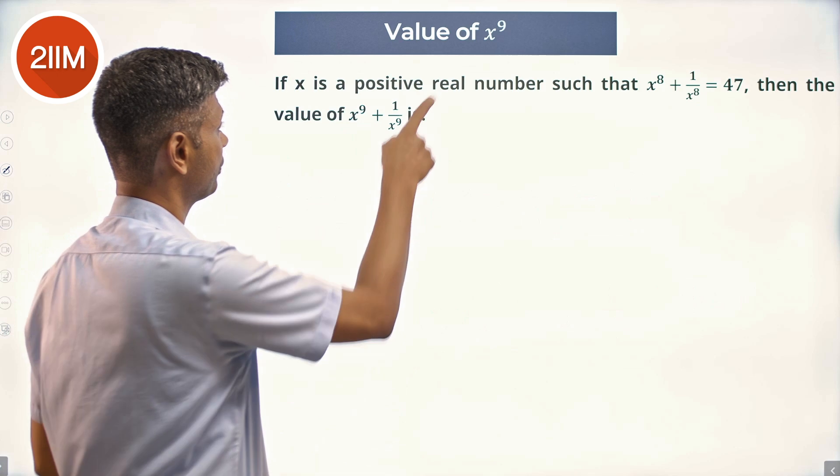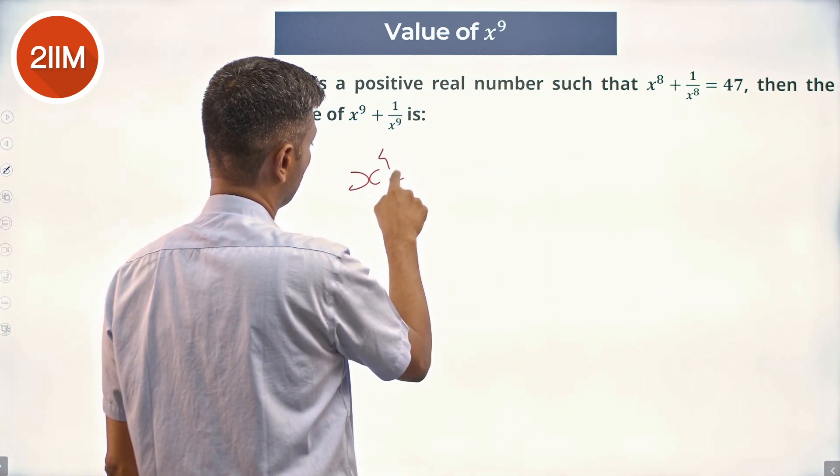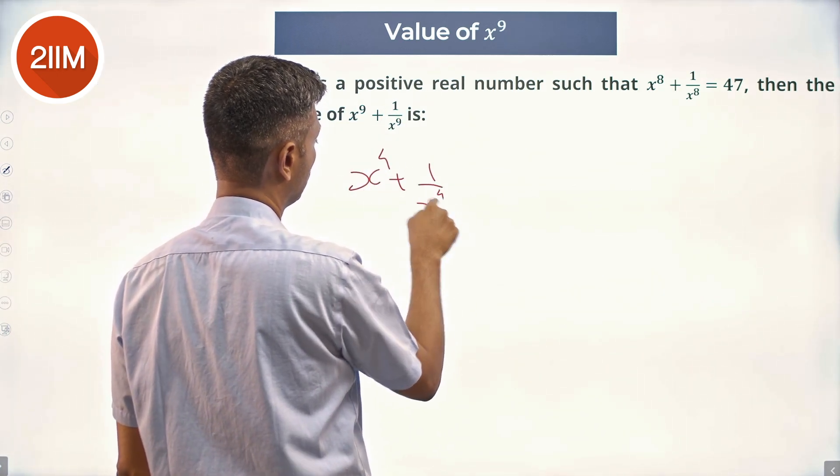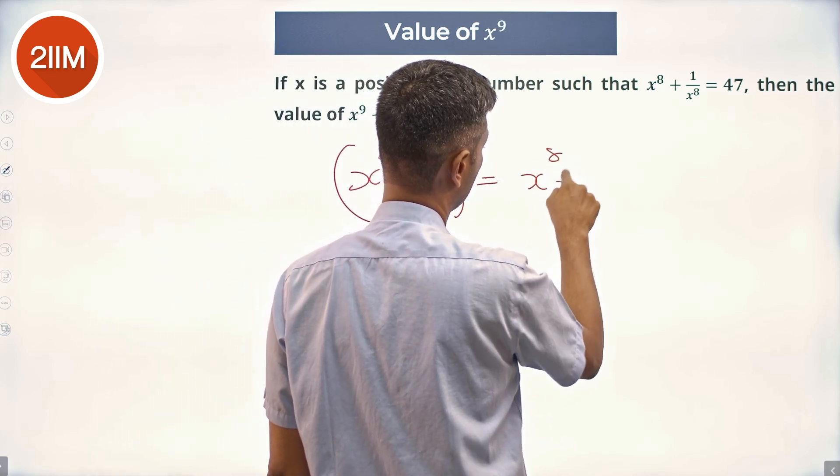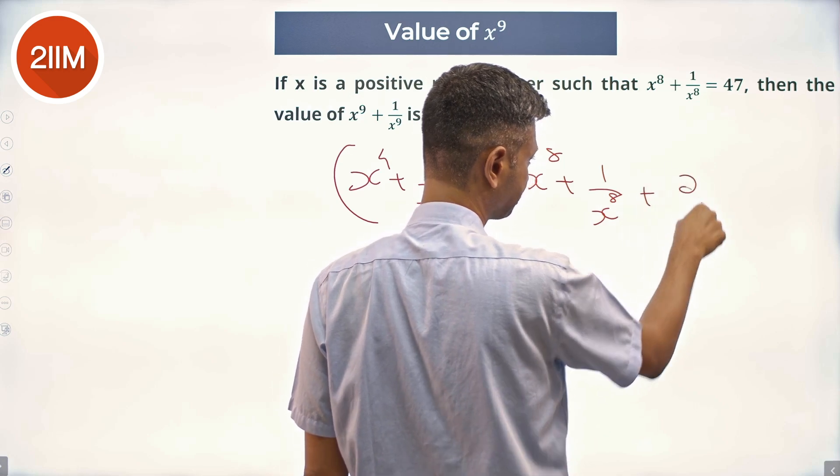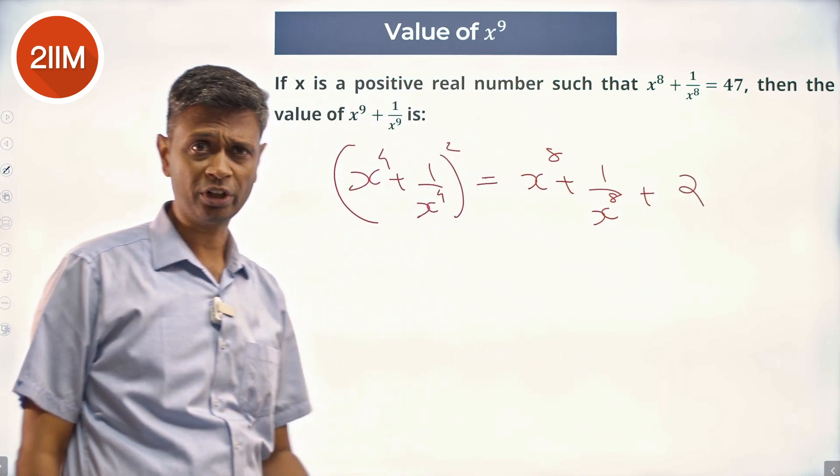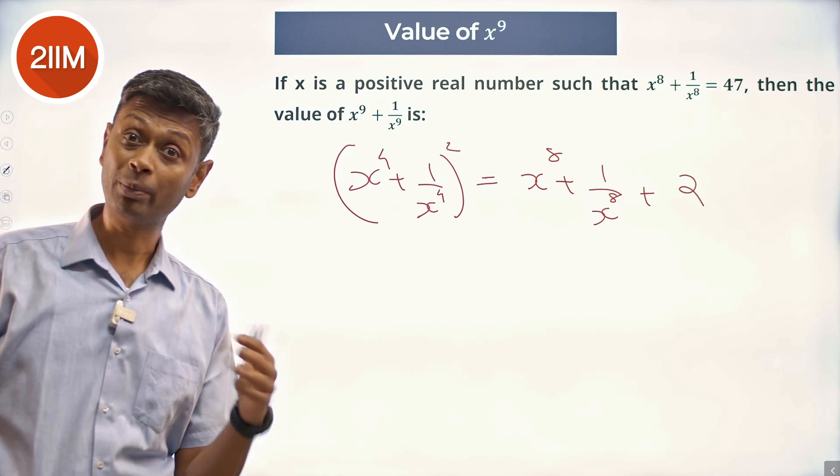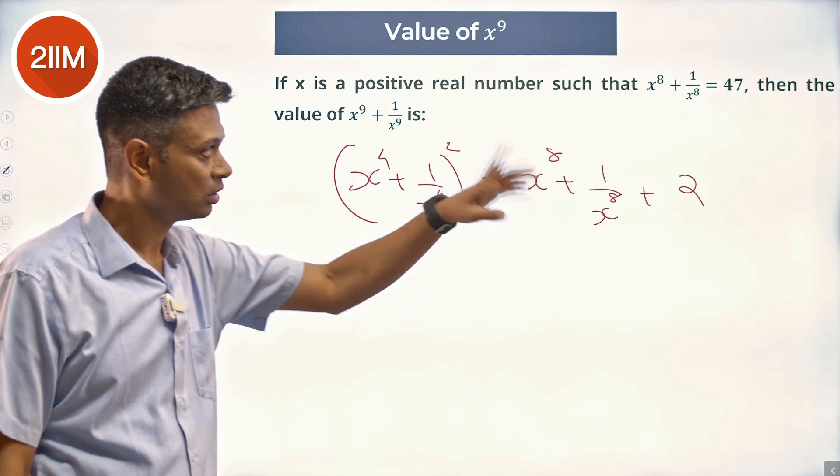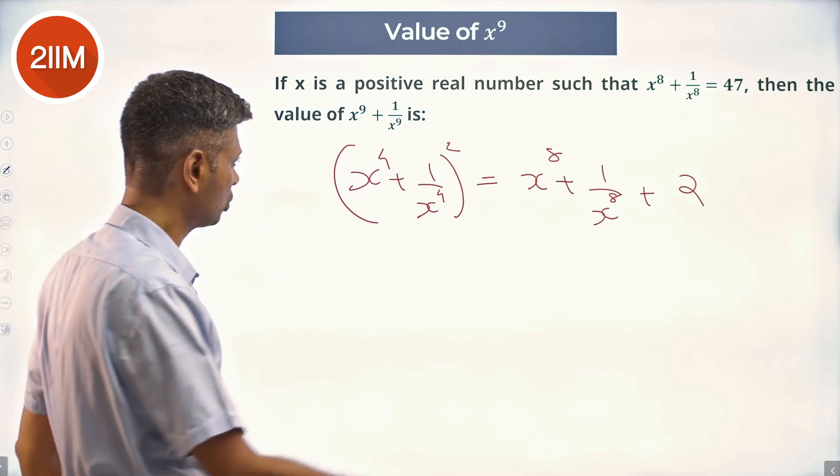Let us go step by step and say, (x^4 + 1/x^4)^2 = x^8 + 1/x^8 + 2. 47 + 2 = 49. x^4 + 1/x^4 is therefore 7 because it cannot be negative. 7 squared, done, so far so good. So now we say hey nice.